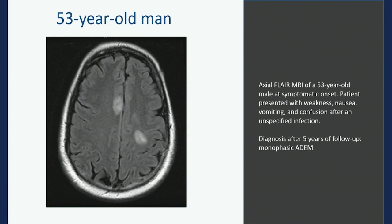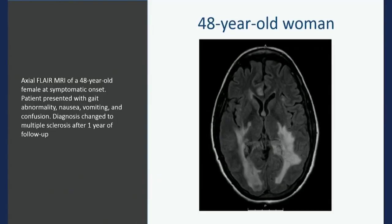This is an MRI axial FLAIR of a 53-year-old man at the time of onset. He had weakness, nausea, vomiting, and confusion — encephalopathy — after a nonspecific infection. After five years nothing additional happened, and that was considered ADEM. A separate patient, a 48-year-old woman, had almost exactly the same clinical onset: gait problems, nausea, vomiting, and confusion — but within just one year, relapsing disease occurred and was diagnosed as multiple sclerosis.